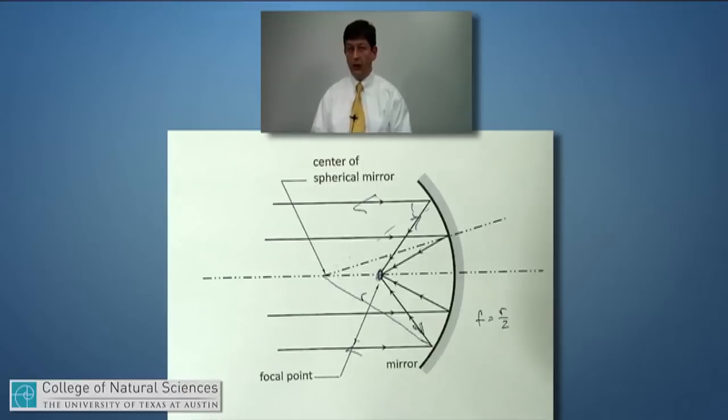We can think of the focal point as the place where light will collect to if it's coming in parallel, or we can think of it as the location, if I put a point source of light, it will send out parallel beams from that location. With that, we'll be able to do quite a few mathematical calculations that allow us to predict the sizes and the orientations and the locations of images from curved mirrors.